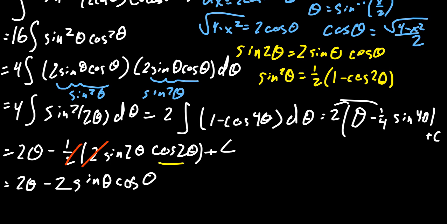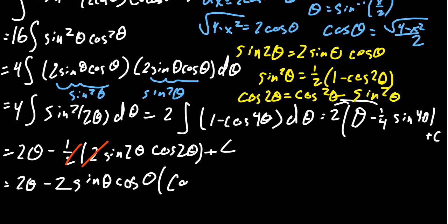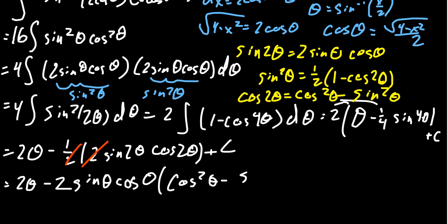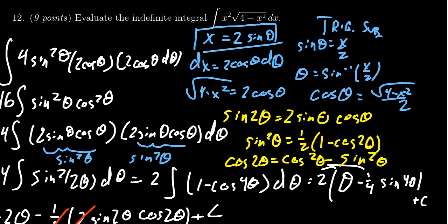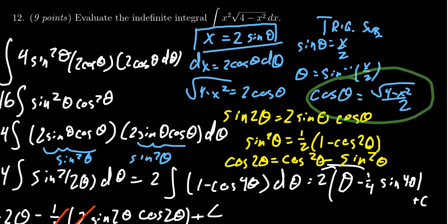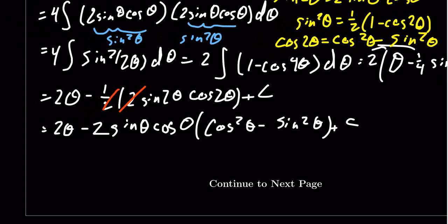We still need to handle cosine of 2 theta. Using the identity cosine of 2 theta equals cosine squared theta minus sine squared theta, we substitute to get 2 theta minus 2 sine theta times (cosine squared theta minus sine squared theta) plus a constant. Now we're in position to switch everything back: sine theta equals x over 2 and cosine theta equals the square root of 4 minus x squared over 2.